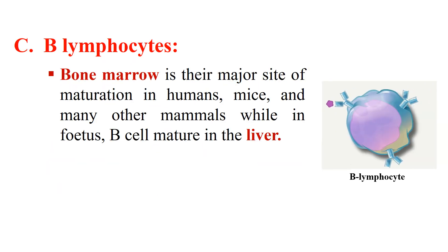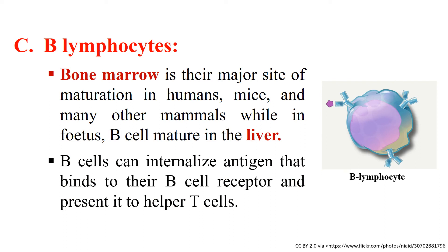The third professional antigen presenting cell is B lymphocytes. They are called B lymphocytes because they get their name from the site of maturation, the Bursa of Fabricius, which is present in birds. The bone marrow is the major site where B lymphocytes mature in adult humans, while in fetuses they develop in the liver. B cells can internalize antigens when the antigen binds to their surface, and present this antigen to T helper cells. They can also recognize soluble antigens for which their B cell receptor is specific, process the antigen by degrading it into smaller fragments, and bind these peptides to the class 2 MHC molecule.